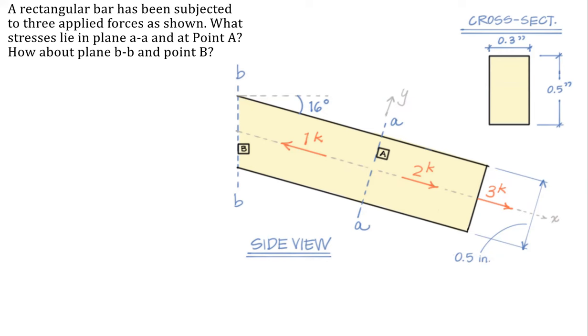Hello, welcome back to my channel. This video is all about stress on an inclined plane. Let's get into it. We have a rectangular bar. Here's the cross section. It measures three inches by five inches. And here is a side view of our bar.